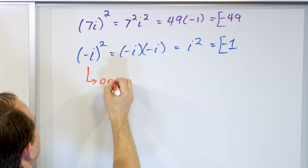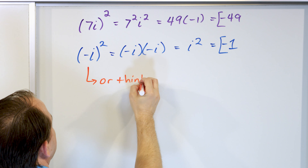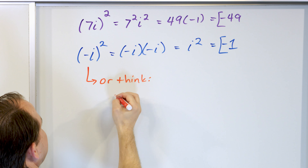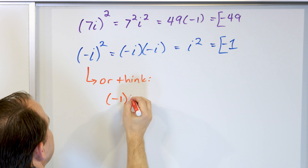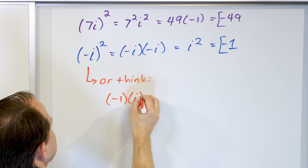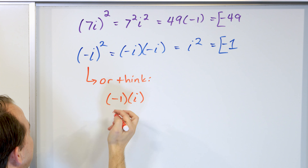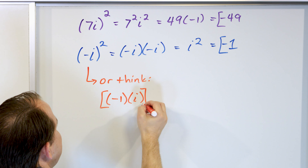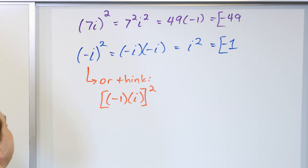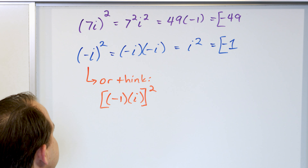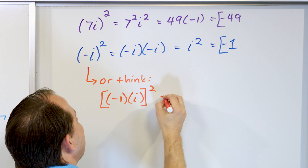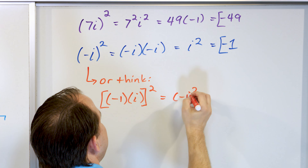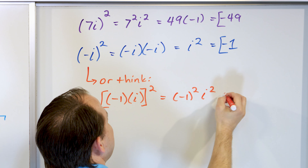What if we have 7i as a quantity and we're going to square that? The square applies to both the 7 and the i: 7 squared is 49, and i squared is always negative 1. Multiply those together and the answer is negative 49.